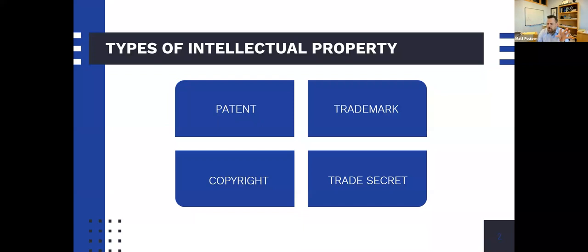So anyway, four main categories of intellectual property — I think everybody's pretty familiar with patents, trademarks, copyrights, trade secrets. Patents are obviously the inventions, the high-tech stuff that you're working on.